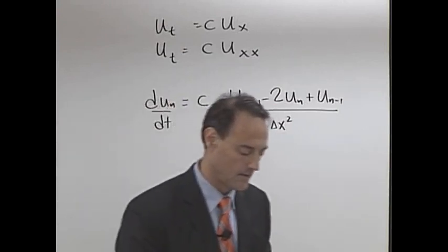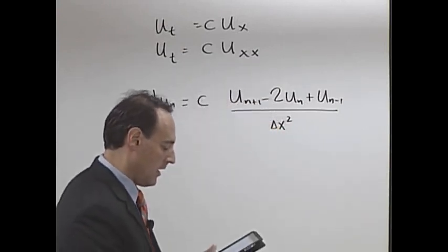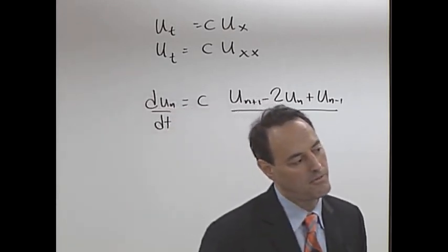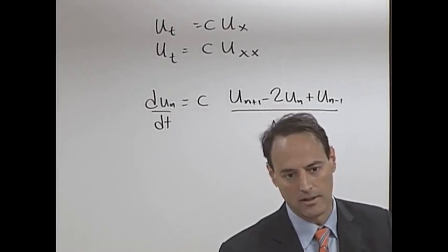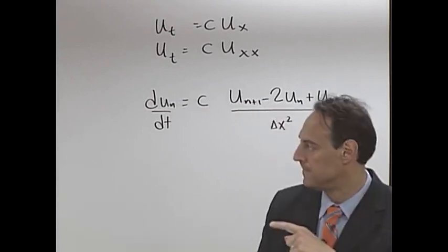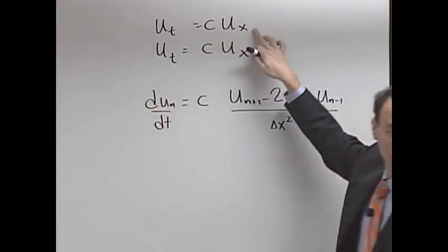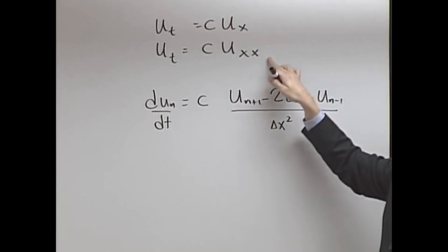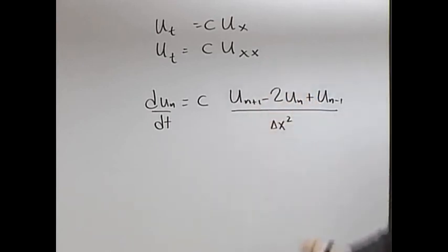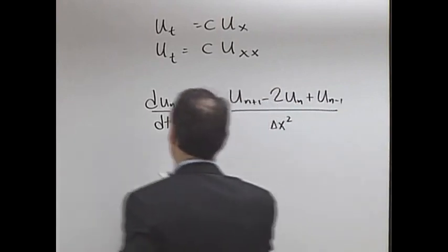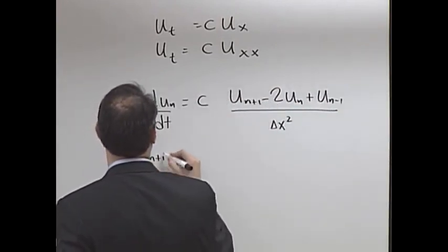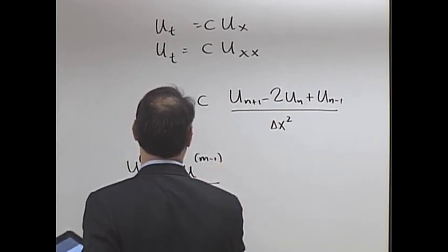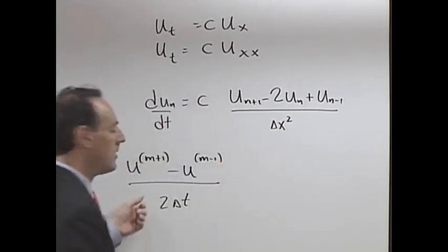This is why CFL is important, because there's a delta x squared sitting there. And now what we're going to do is we're going to discretize in time. Now, how do we discretize in time? You know what, leapfrog seemed to work pretty well for us before. In fact, Euler for the one-way wave equation was always unstable, and leapfrog worked.